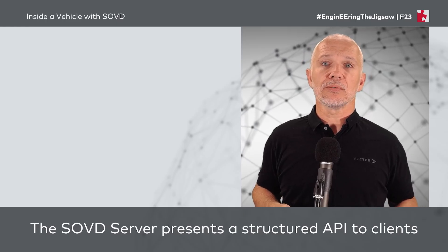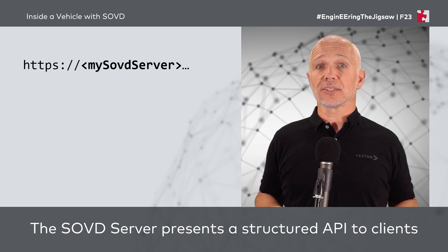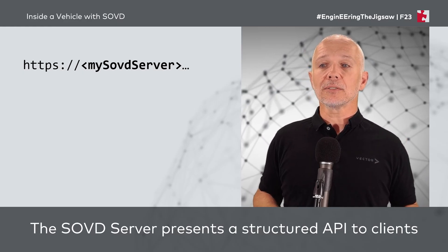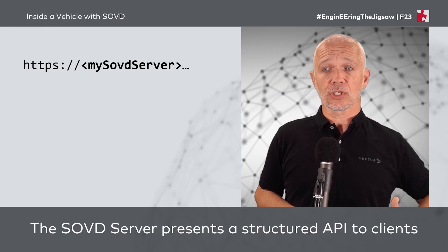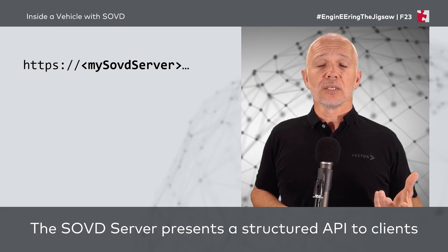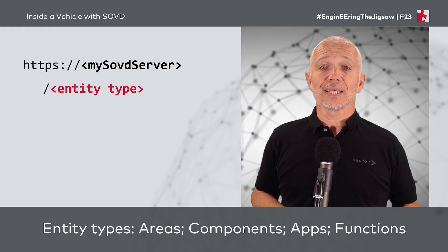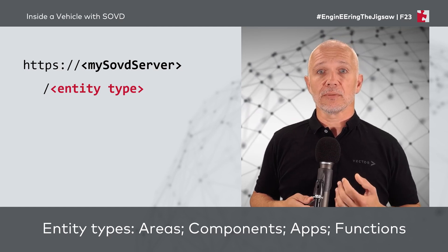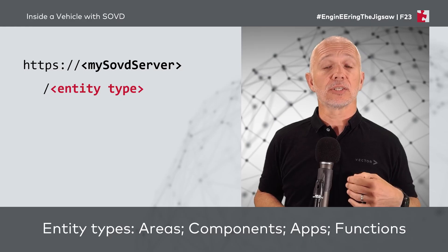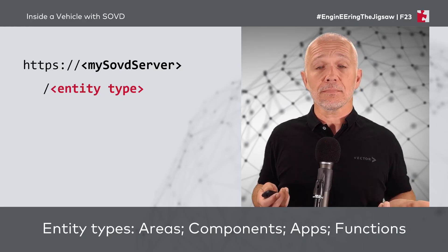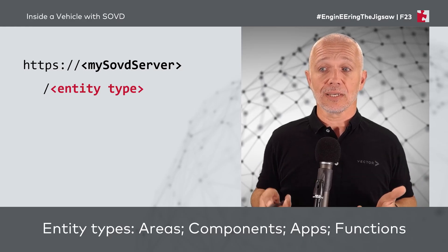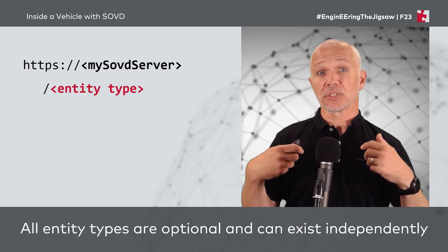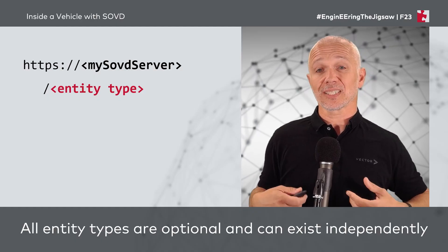What does structured mean? We have, firstly, a web address that will get us to the SOVD server for a particular vehicle. Within this, we have a structure of things we can talk to. Within an SOVD vehicle, we can think about accessing different kinds of entity types. We have the ability to define areas, components, apps, and functions as entity types. All of those entity types are optional, so we really have to perform a discovery process when we connect to a vehicle equipped with an SOVD server to understand what entity types are available.